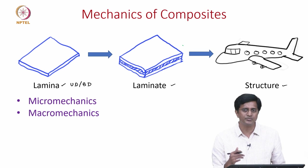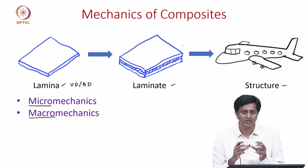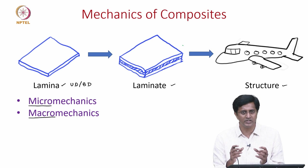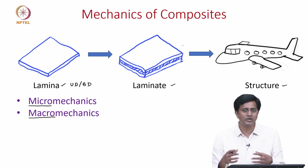Focusing on the lamina, there are two aspects we need to focus on: one is the micro mechanics and the other is the macro mechanics. When we say micro we are looking at the micro level of a lamina — at that level we have both the fiber and the matrix material. We take the properties of the fibers, consider the properties of the matrix, and use this information to estimate the properties or how the lamina will behave.